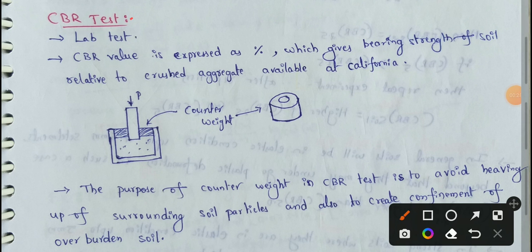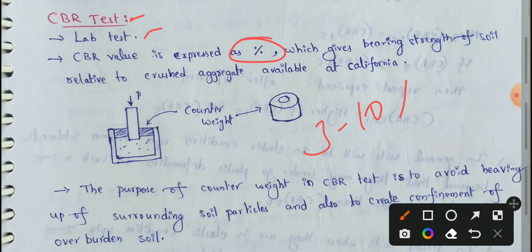CBR means California Bearing Ratio. The CBR test is a laboratory test. CBR value is expressed as a percentage. The average CBR value is in the 3 to 10% range, which gives the bearing strength of soil relative to crushed aggregate available at California, USA.